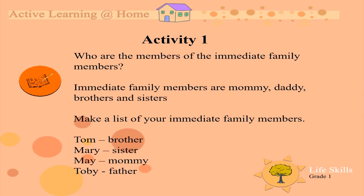I want to know from you, who are your immediate family members? Immediate family members means mommies and daddies, brothers and sisters. Can you make a list of your family? When you make this list, can you write down the family member's name, and next to it, tell me if it's your brother, or if you're going to write down your sister, put down her name and write 'sister'. I've done a little table for you as an example.